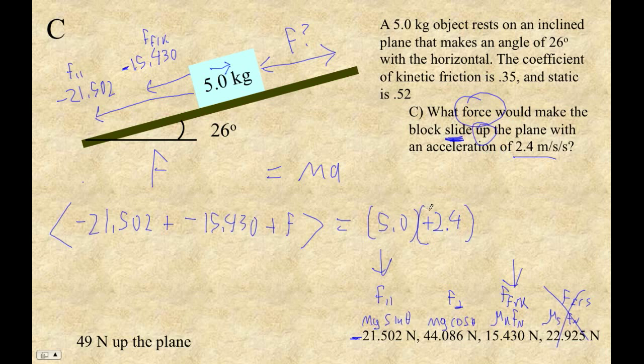So now let's plug that in. So it's going to be 5 times 2.4 plus 15.43 plus 21.502. And that's it, that'll be F. So F is 48.93.